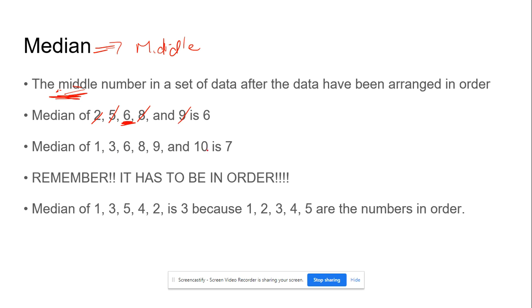If we take this group of numbers here and cross out the first and last, and cross out the second first and second last, we're left with two middle numbers. If there's only one middle number, that's the median. If there's two middle numbers, you have to add those both up and divide by 2. So 6 plus 8 equals 14, divided by 2 equals 7. So the median is 7.